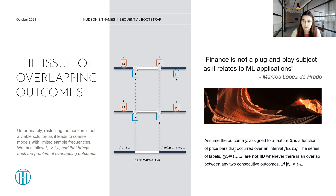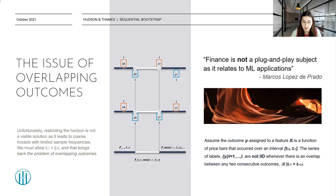This means there exists such i where Ti1 is greater than Tj0 for the consecutive outcome. So what does it mean that Yi and Yj are overlapping? It means they are both functions depending on the same return based on this overlap section. The simplest solution that comes to mind is to restrict the horizon, so that Ti1 should not be greater than Tj0. But unfortunately, restricting the horizon is not a viable solution, as it leads to coarse models with limited sample frequencies. For labeling techniques such as the triple barrier method, we absolutely must allow for Ti1 to be greater than Tj0, and that brings back the problem of overlapping outcomes.